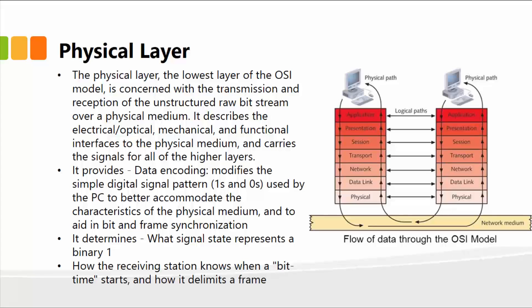Its function is to take a look at the piece of information that it receives, and then it encodes it, makes sure that all the bits are there. It also determines what signal state represents a binary one, and how the receiving station knows when a bit starts and where it stops, and how it delimits the frame itself. So that's the main function of the physical layer.